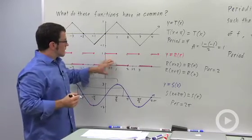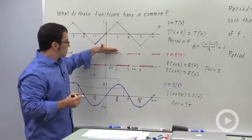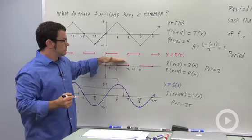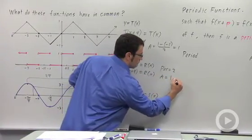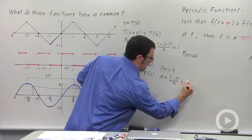What about this one? The maximum value here is 1, the minimum value is 0. Here, the amplitude would be 1 minus 0 over 2, which is 1 half.